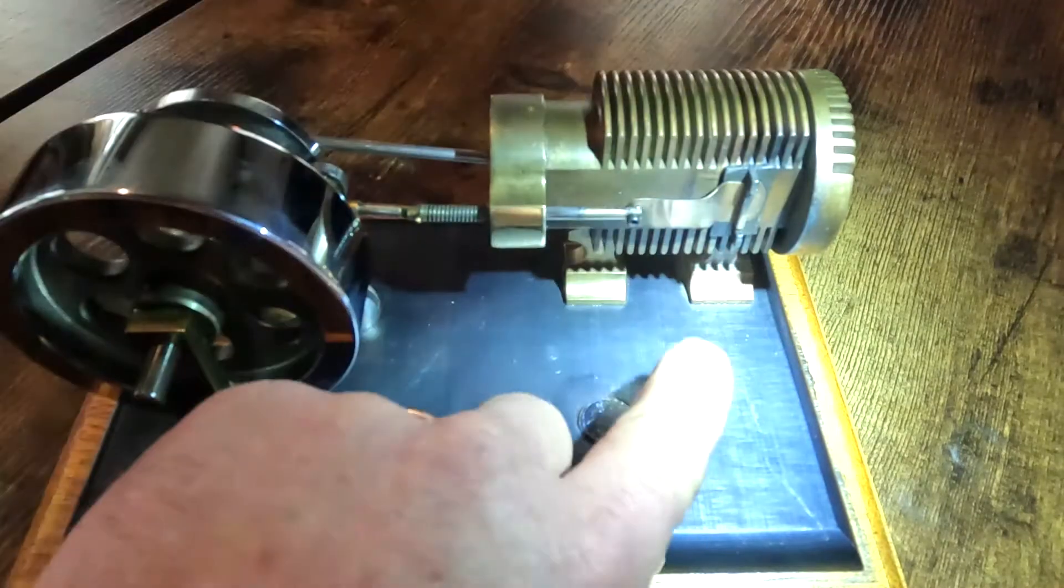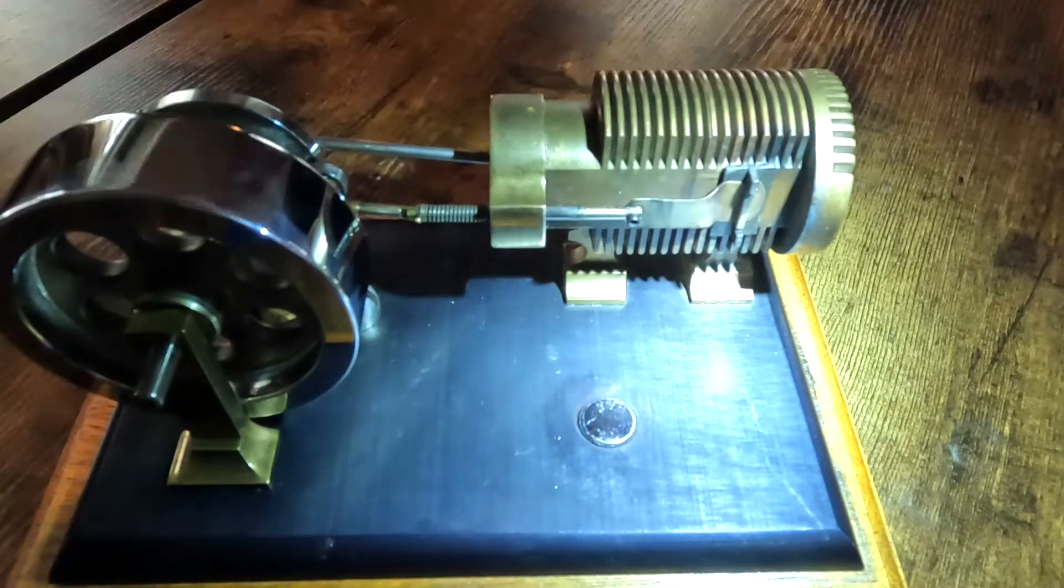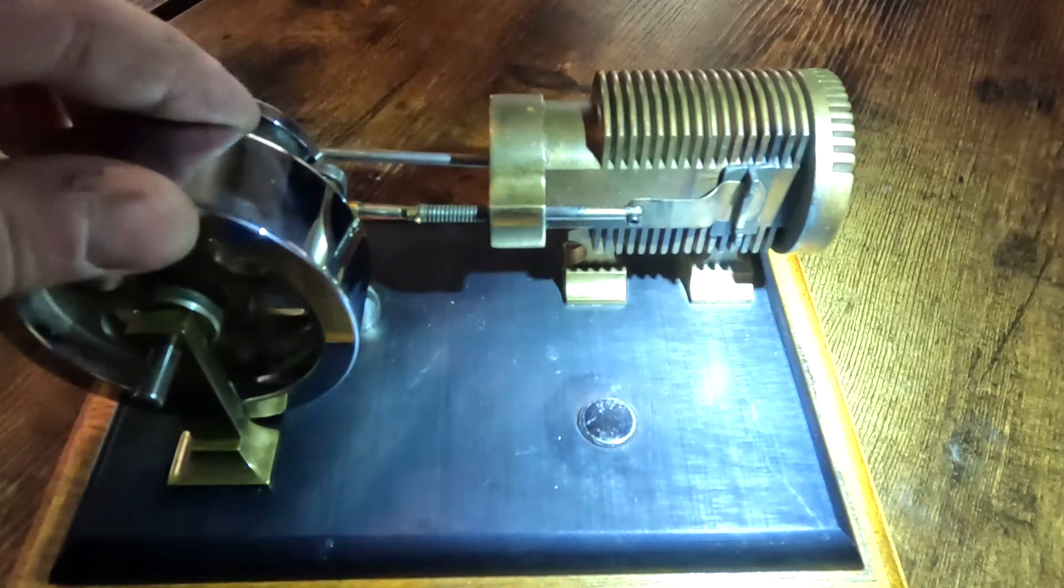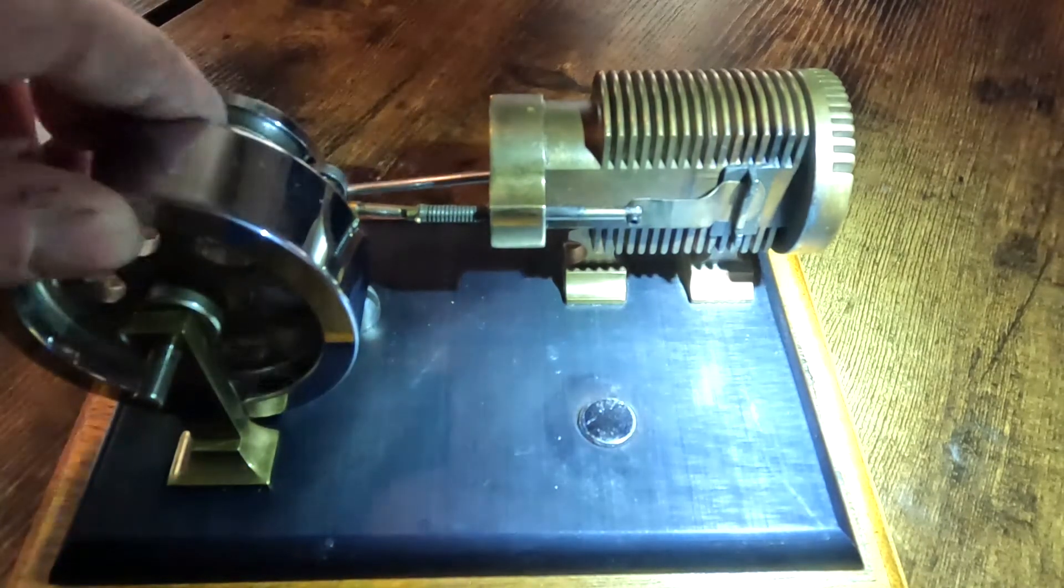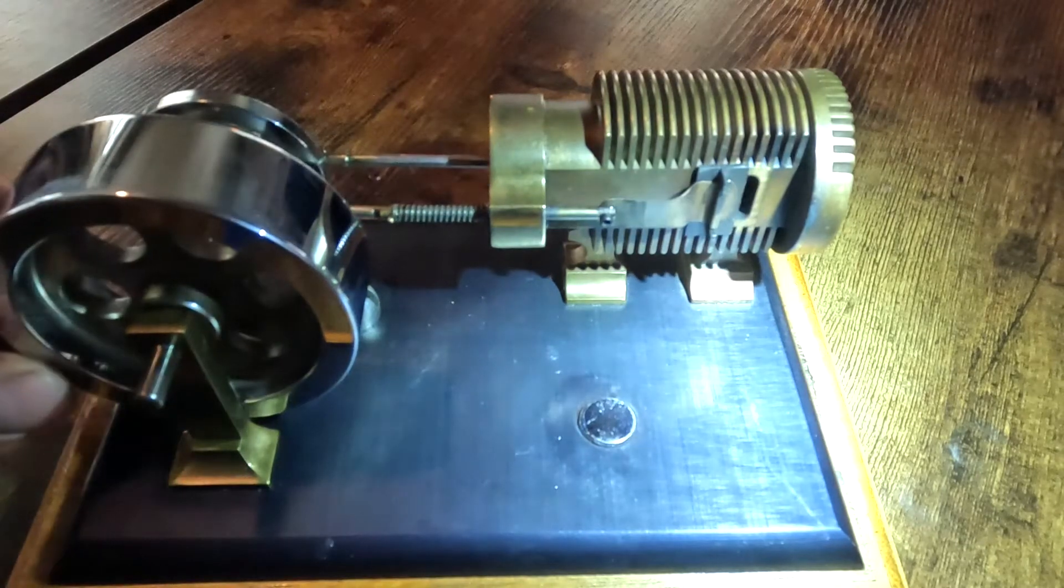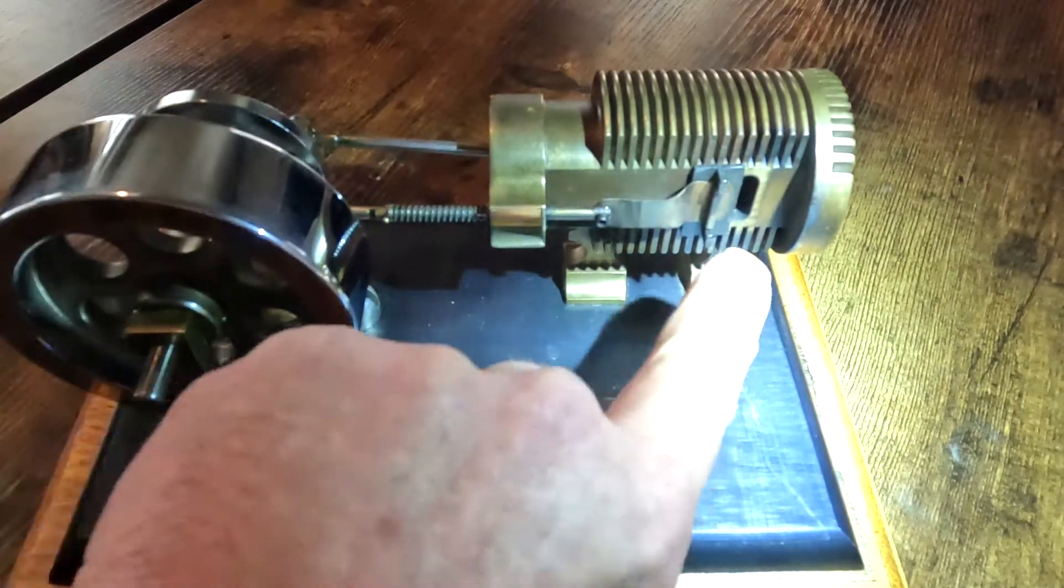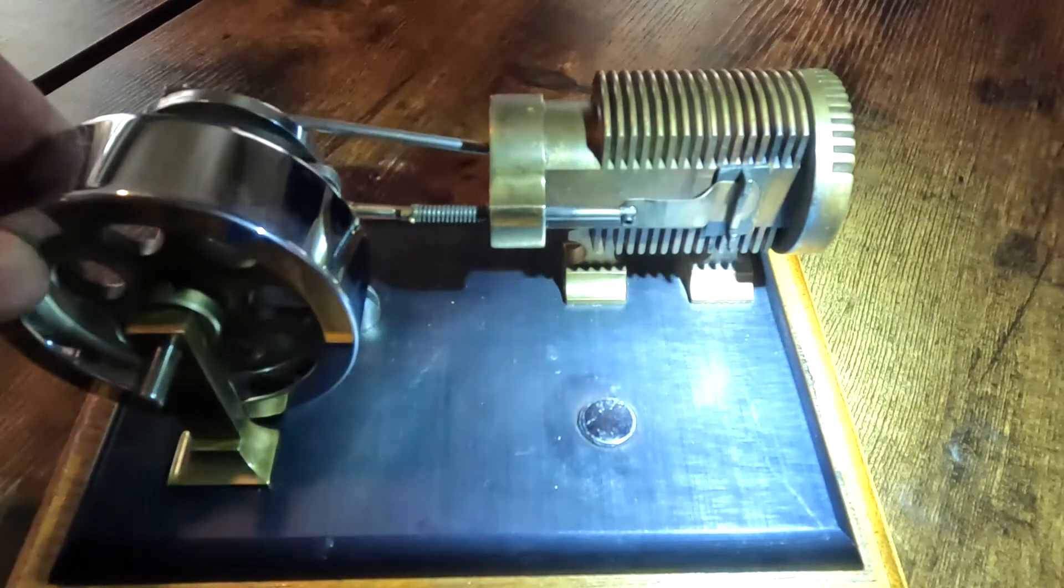Now since that is closed off, that heat from the flame inside of there is going to cool quickly causing a vacuum. The vacuum pulls the piston back up and right then, as soon as we get up here, that valve's open again and the cycle continues.